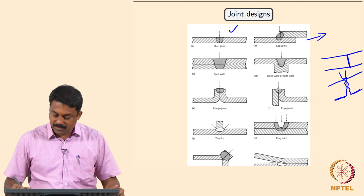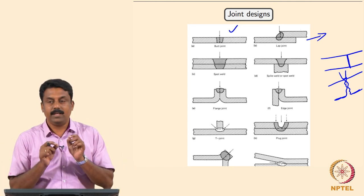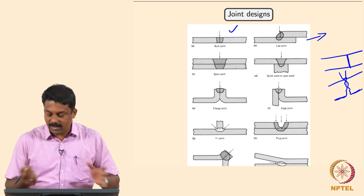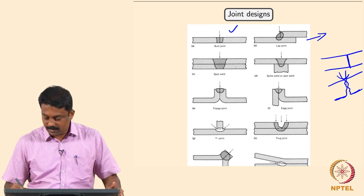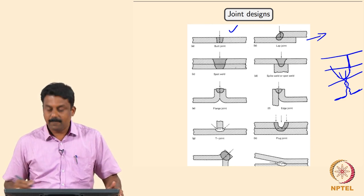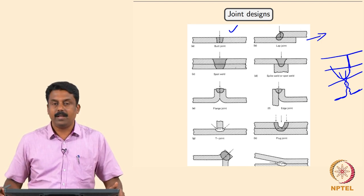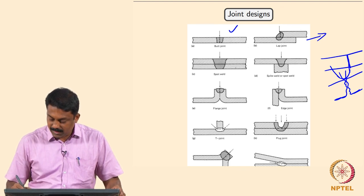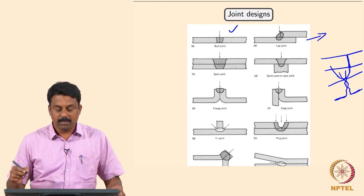The preparation of the edge is extremely critical for laser and electron beam welding because the heat source itself is very narrow. In arc welding, the envelope is about 5 mm, so the arc will have a much wider heat source. Even if you have a small problem in edge preparation, you can still overcome that. But in laser welding and electron beam welding, edge preparation is very critical.